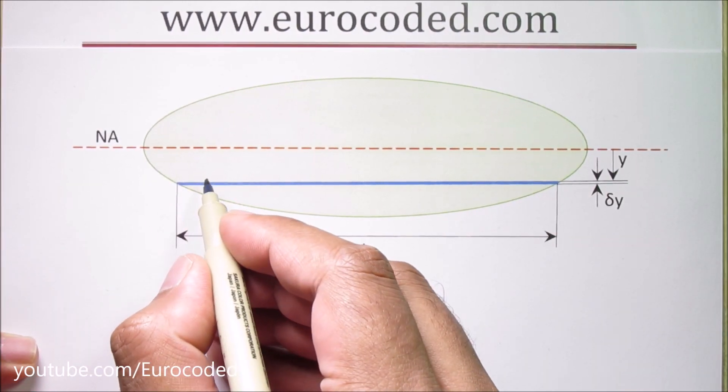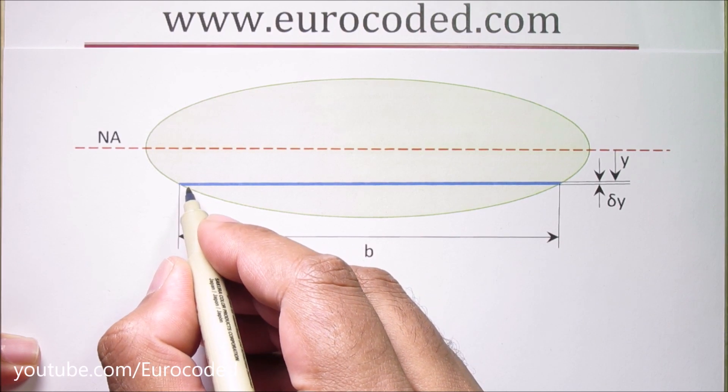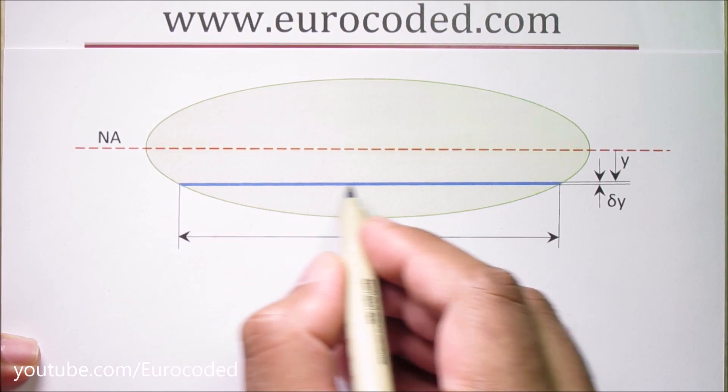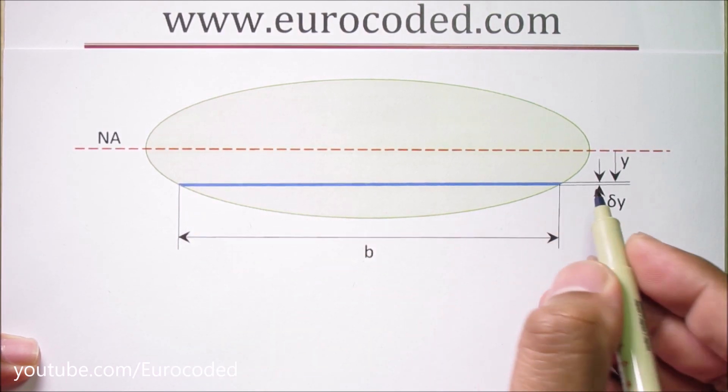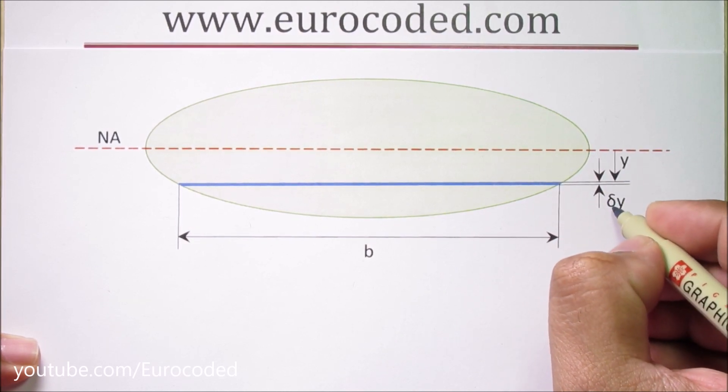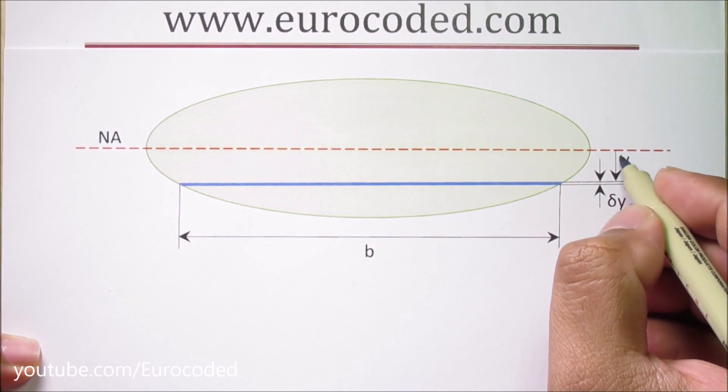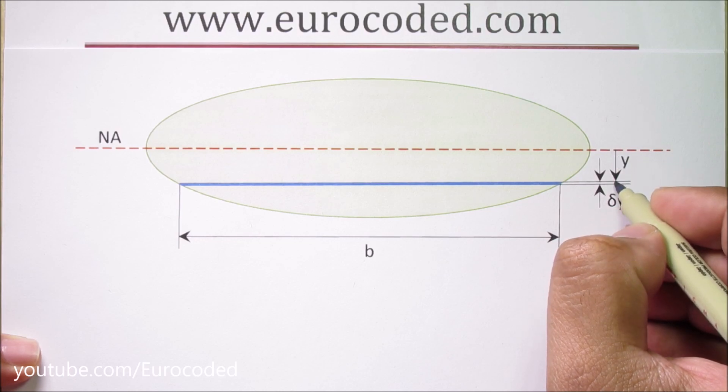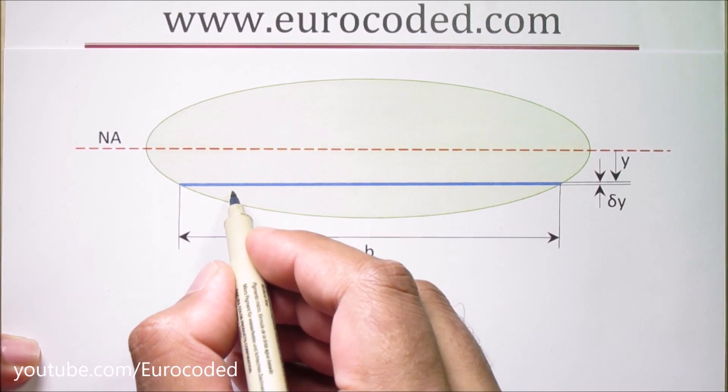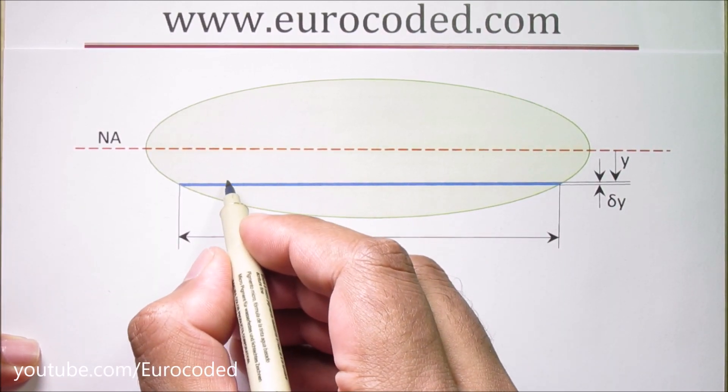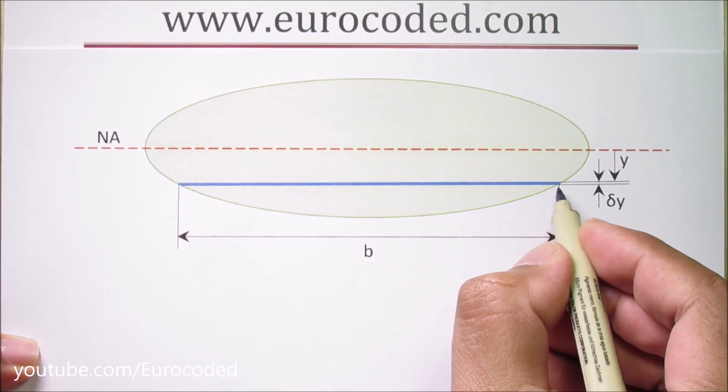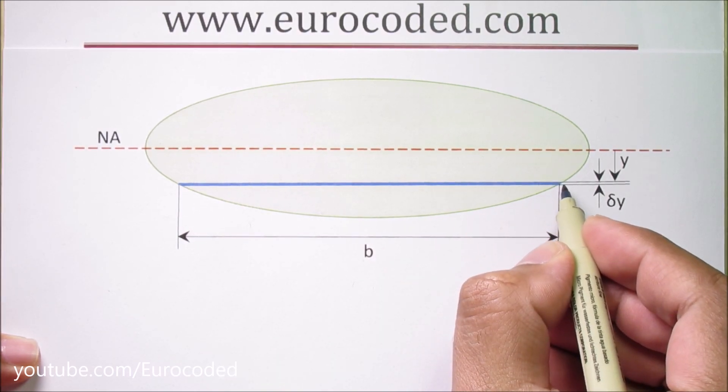What we are going to do is we are going to consider a very small strip in this beam with a delta y thickness and this strip is located a distance of y from neutral axis. As the thickness of this strip is very small we can consider this strip as a rectangle.